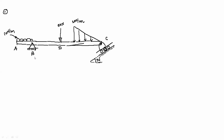We will now solve a problem on support reactions and types of load. Beam ABCD is loaded with a UDL of 10 N/m, a UVL of maximum intensity 20 N/m, and a point load of 50 N. The beam is supported at point B by a hinge support and at point C by a roller support inclined at 30 degrees. We need to find the support reactions at B and C for the system to be in equilibrium.